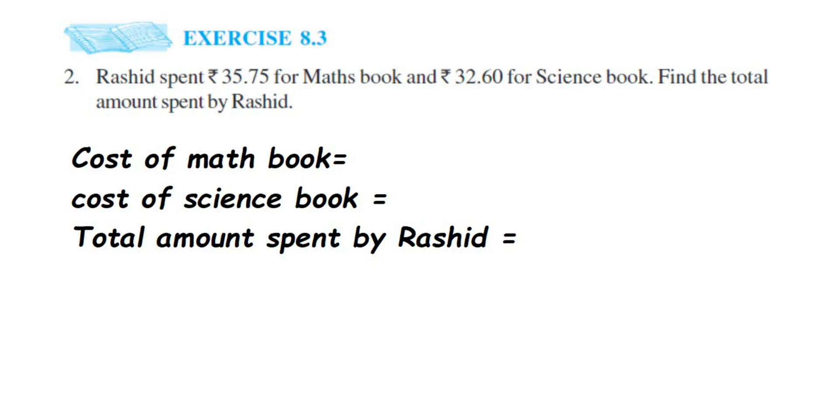Hey everyone, here's a question on decimals. This is Exercise 8.3, second question, chapter is decimals. Rashid spent rupees 35.75 for maths book and rupees 32.60 for science book. Find the total amount spent by Rashid.